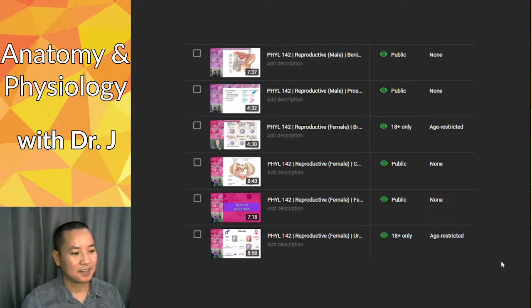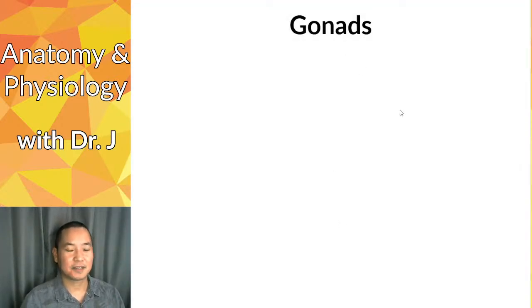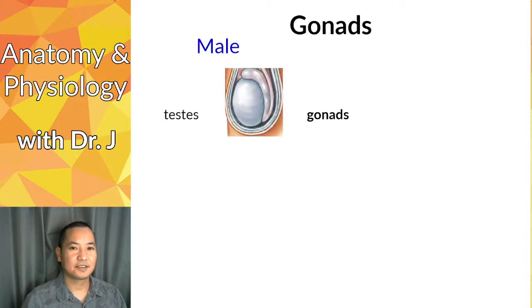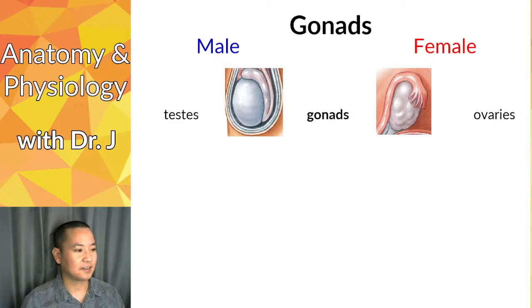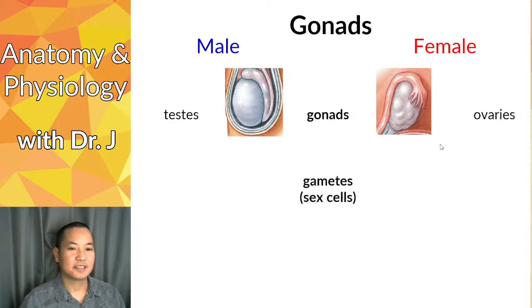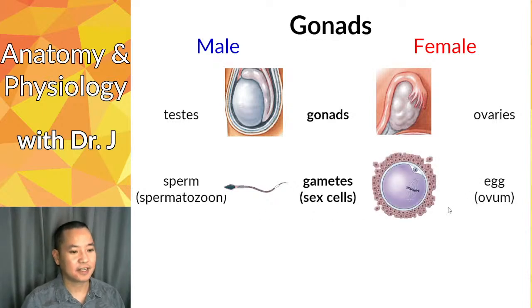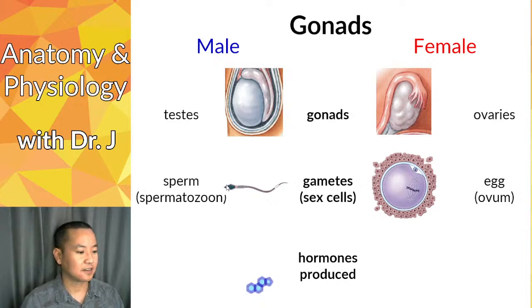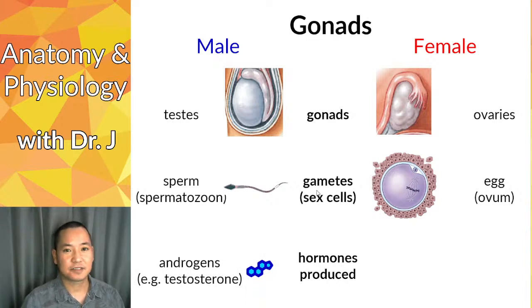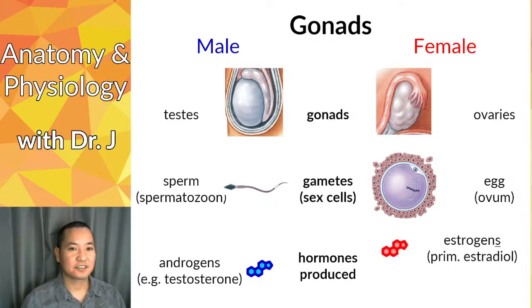Let's talk about the reproductive system basics. We have gonads — whenever I talk about the reproductive systems, male and female, I'm talking about biological sex, not gender. The male gonads are the testes and female gonads are the ovaries. Gametes are sex cells that combine to form a new individual. The male gamete is a sperm or spermatozoan, and the female gamete is the egg or ovum. The main category of male sex hormones are androgens, like testosterone.